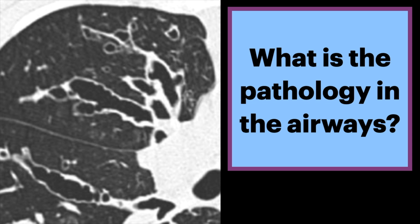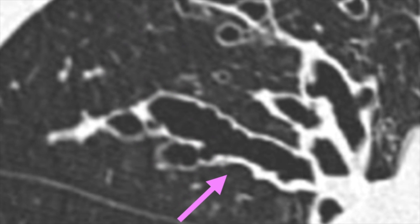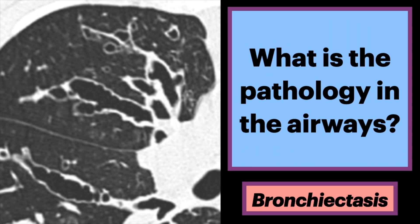What is the pathology seen in these airways? On this axial CT of the chest, we see large dilated airways. All airways are diffusely involved, and the walls are irregular, resembling a varicose vein. The answer is bronchiectasis, particularly the varicose variety, which we will describe later.